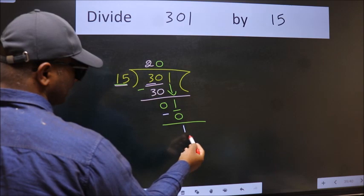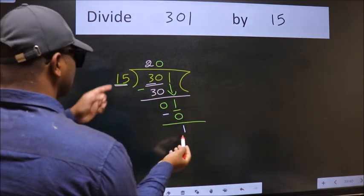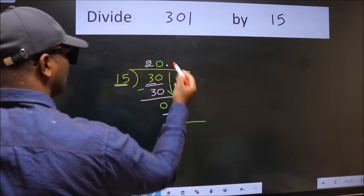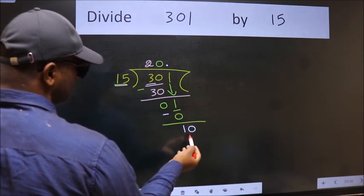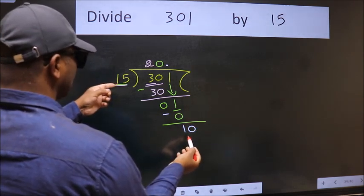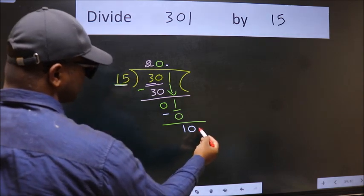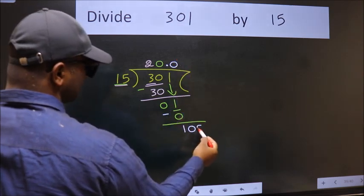Over here we did not bring any number down, and 1 is smaller than 15. So now we can put a dot and take 0. So 10. 10 is still smaller than 15. We already have the decimal.